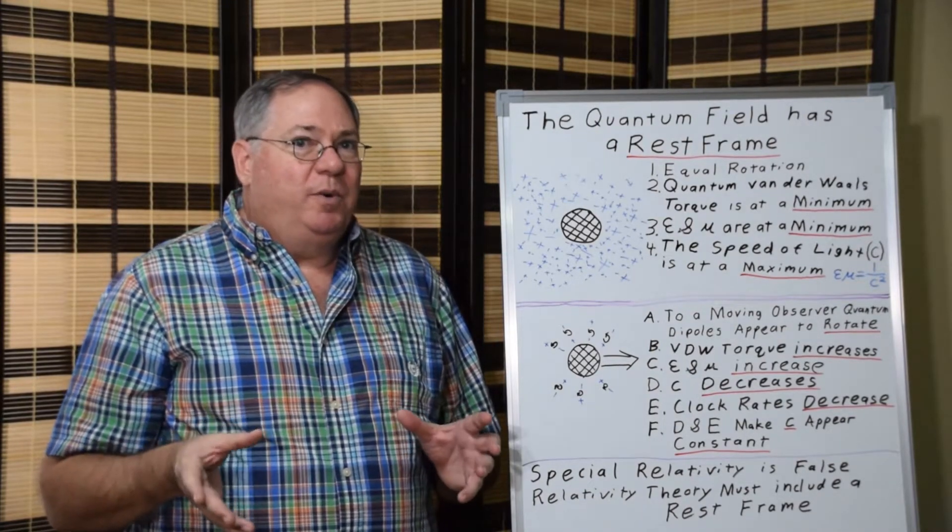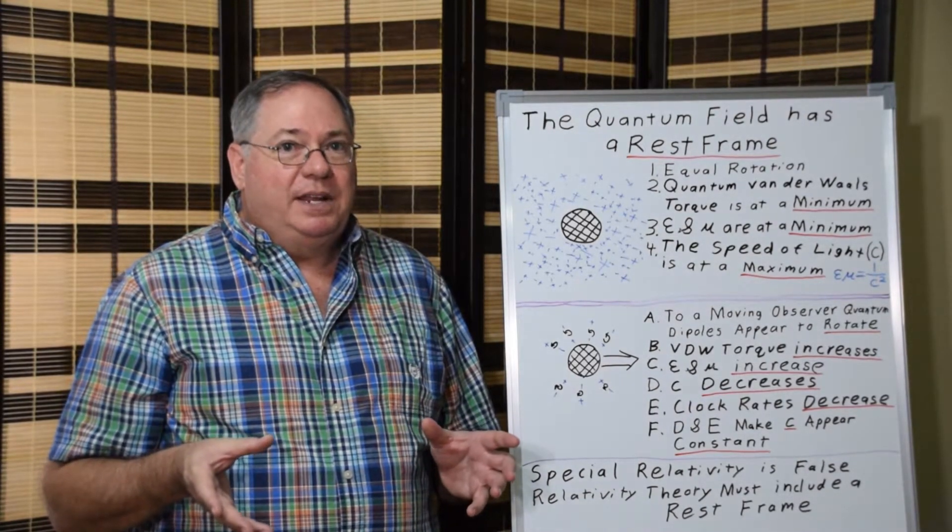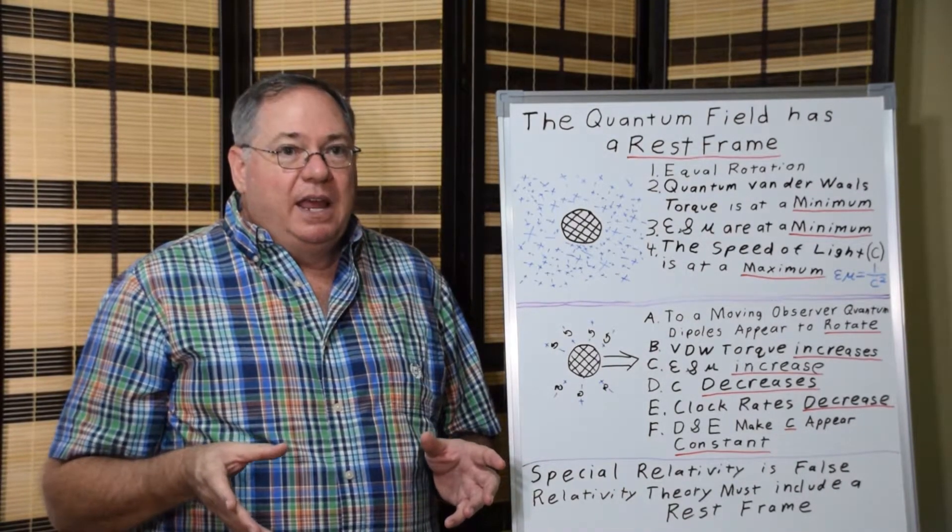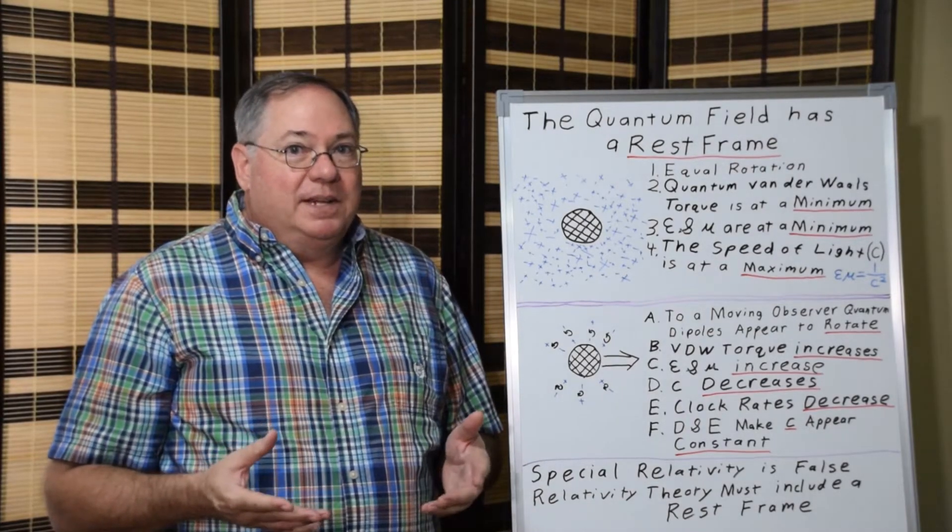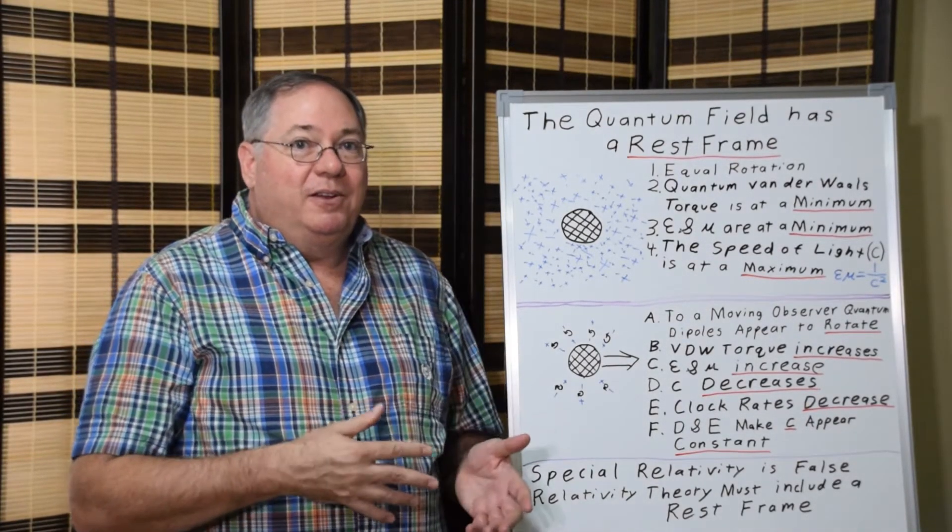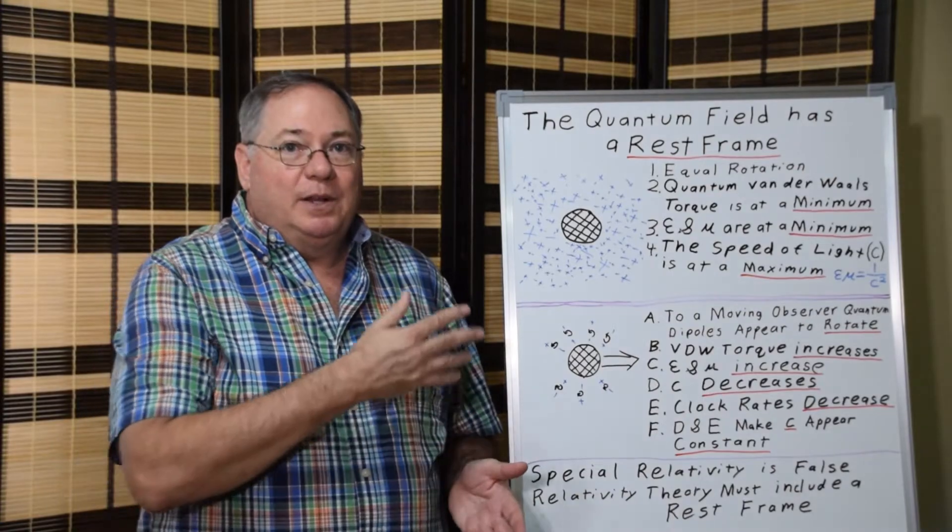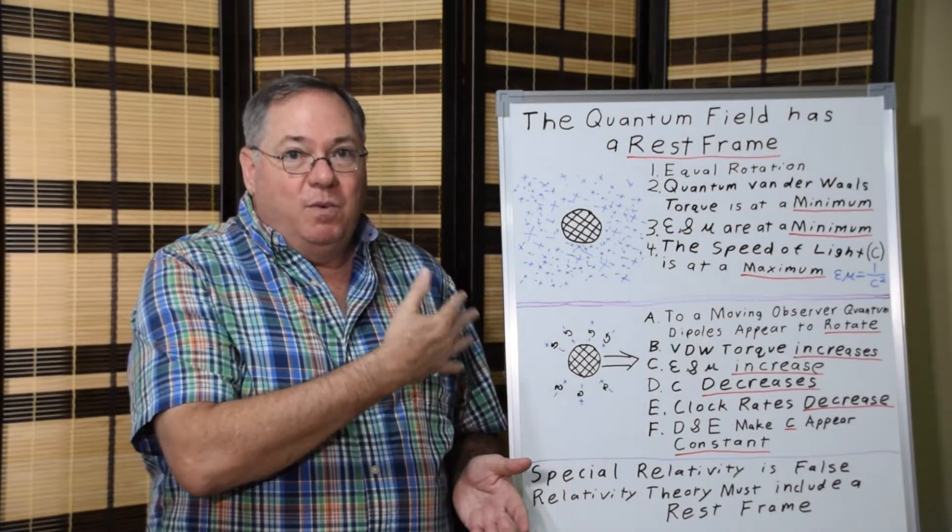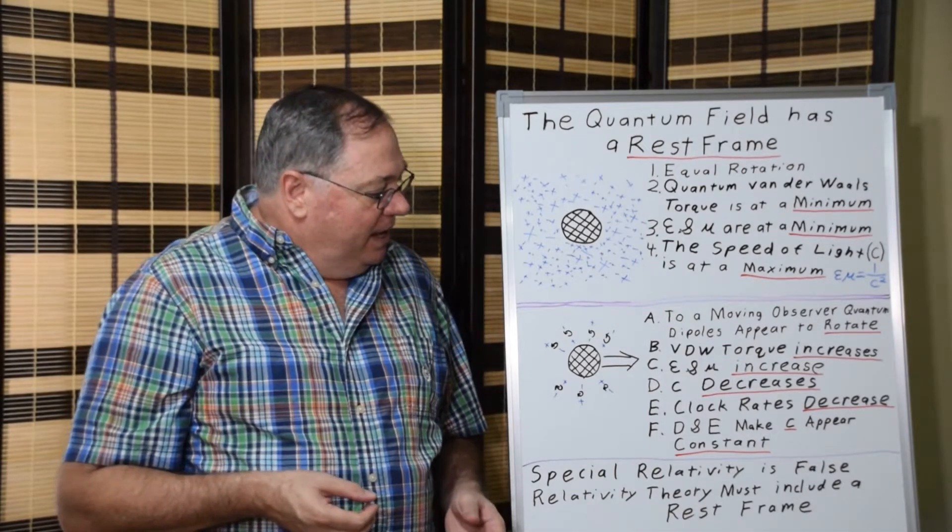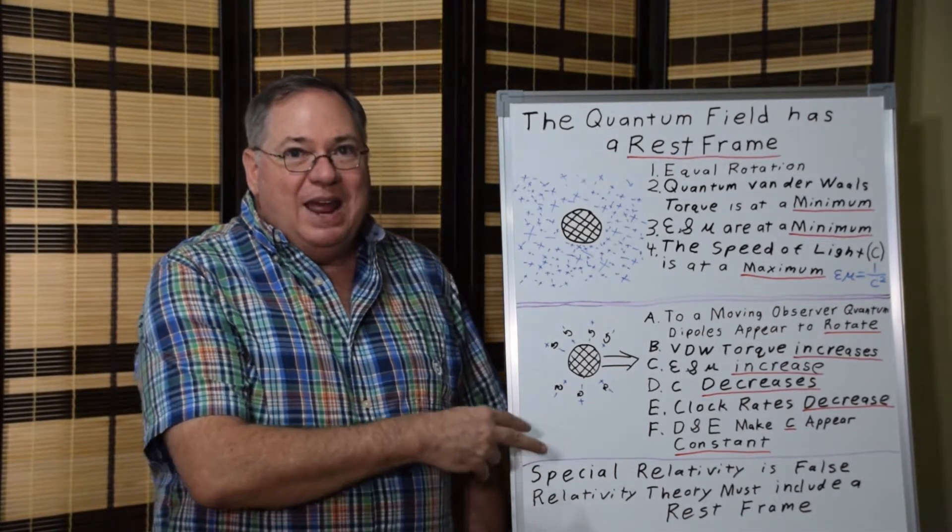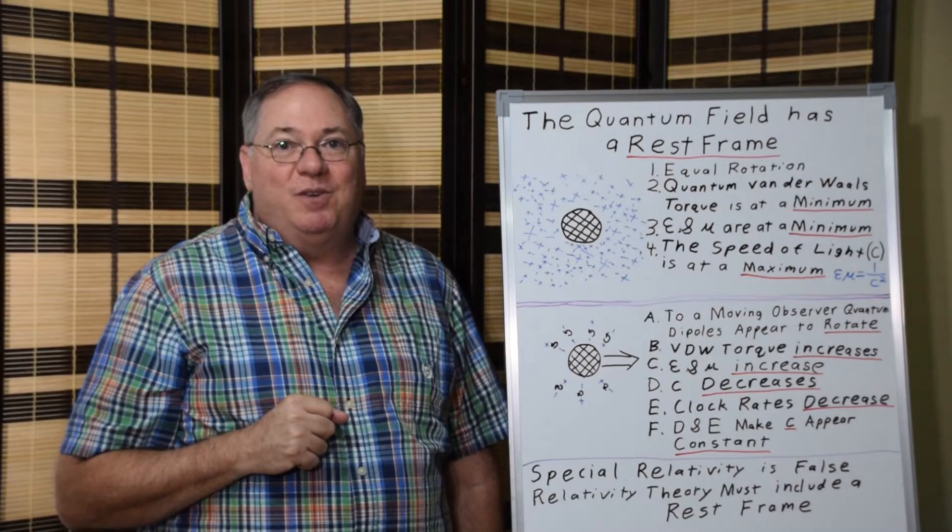So there were two formulations of relativity theory in the early 1900s. Einstein won out because of the denial of the existence of ether and the failure to recognize at that time that the quantum field was and is essentially the ether. So scientists chose the wrong way to go.